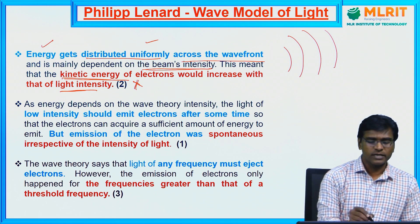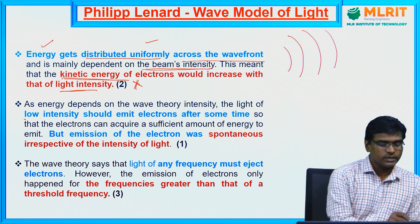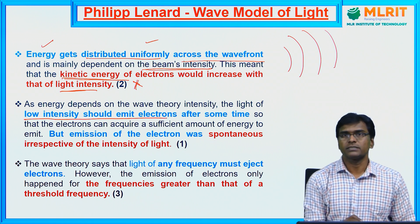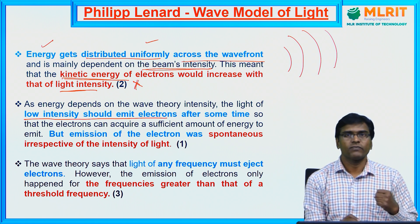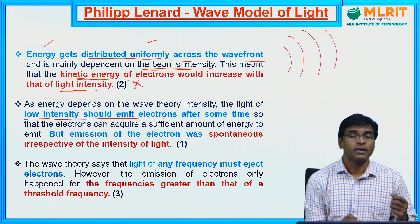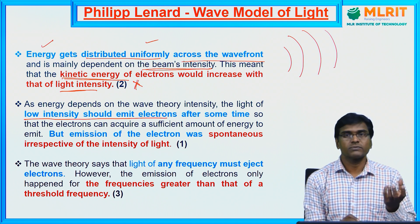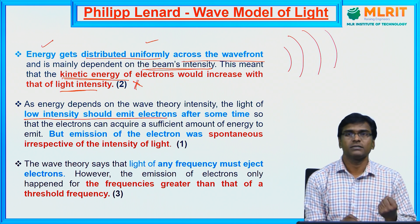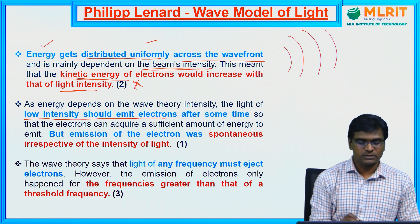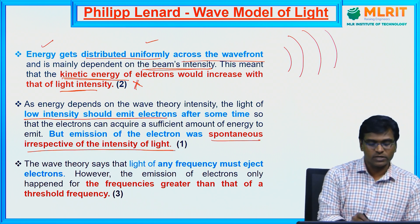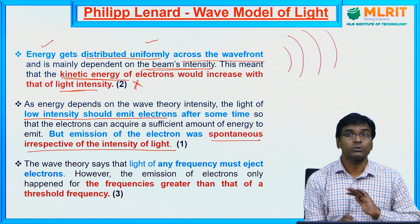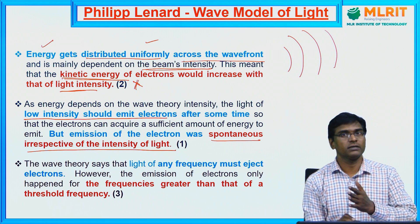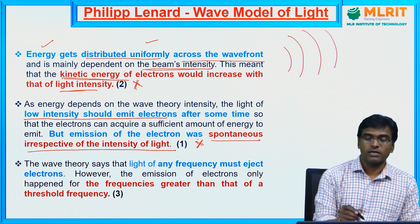Since energy depends on intensity under the classical model, if you shine low-intensity light on a metal surface, the electrons would take a longer time to come out because they must accumulate enough energy to overcome the work function. But in reality, in the photoelectric effect, electrons come out immediately and spontaneously — there is no time lag between the shining of the light and the emission of electrons. This could not be explained by the classical wave model.